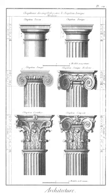Modillion: enriched block or horizontal bracket generally found under the cornice and above the bed mould of the Corinthian entablature. It is probably so-called because of its arrangement in regulated distances.